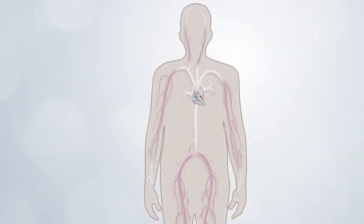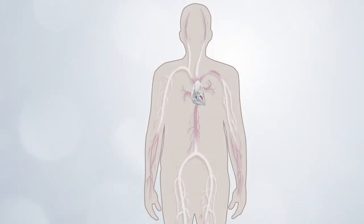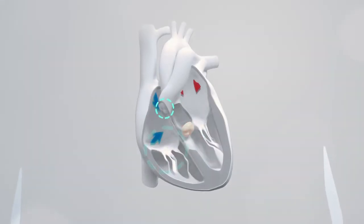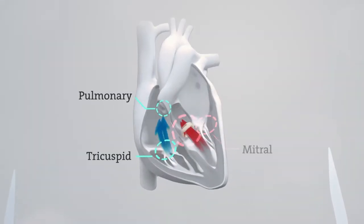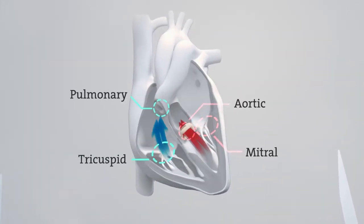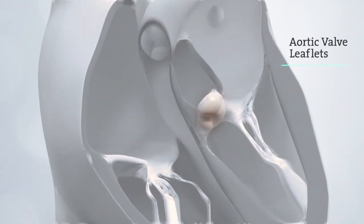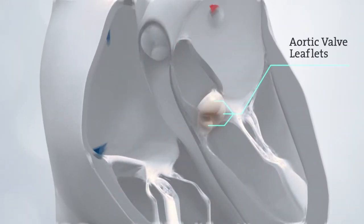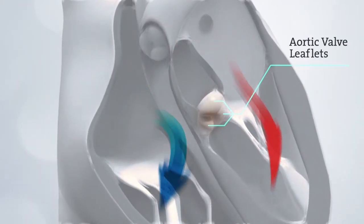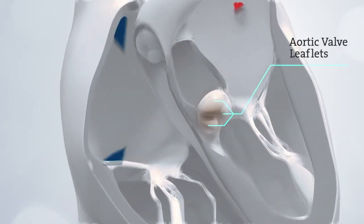The heart's main function is to pump blood to the rest of your body. The heart contains four valves. Normal valves have two or three flaps of tissue called leaflets that open and close like gates to control the flow of blood through your heart.